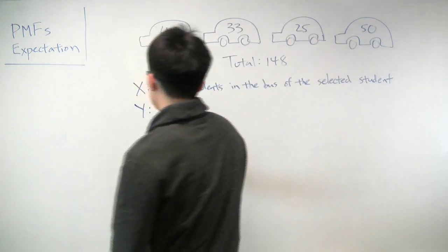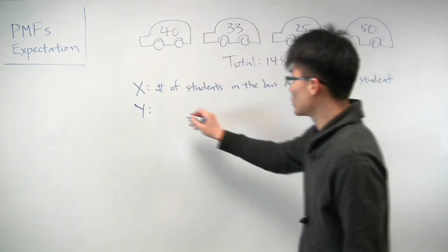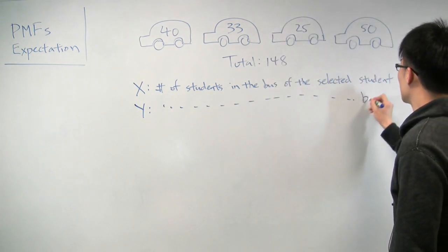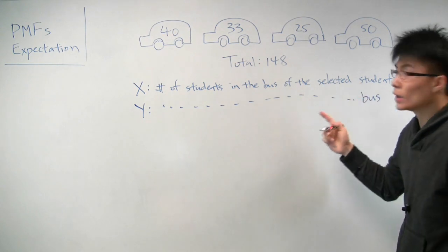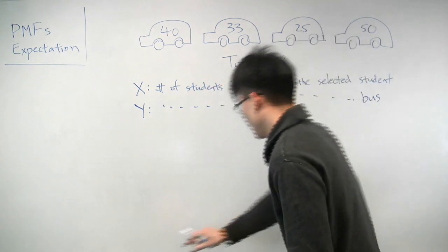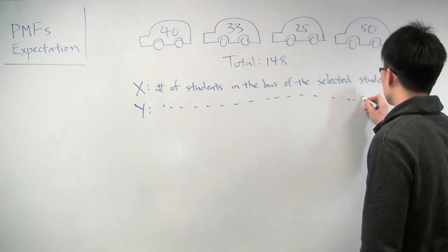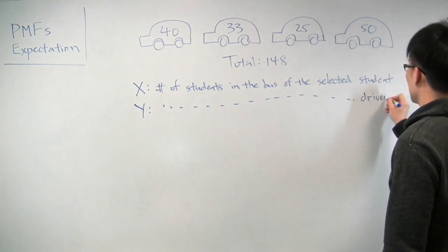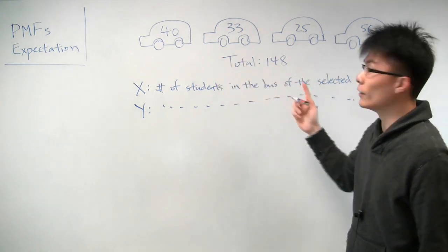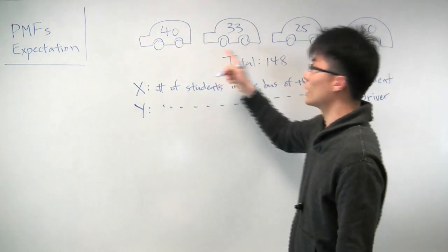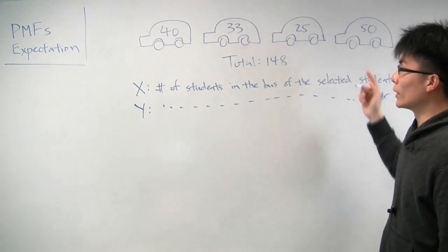And then let's come up with another random variable, y, which is almost the same thing, except instead of now selecting a random student, we'll select a random bus or equivalently we'll select a random bus driver. So each bus has one driver. And instead of selecting one of the 148 students at random, we'll select one of the four bus drivers, also uniformly at random.